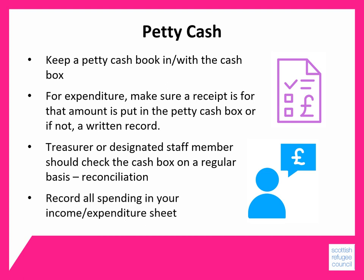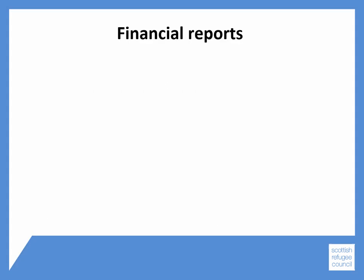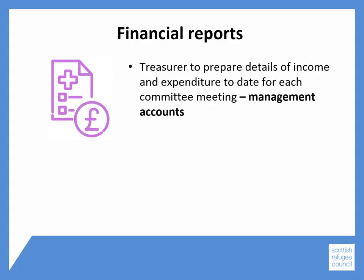All of this spending should eventually be recorded in your income expenditure sheet. You can decide whether you have to detail every single petty cash transaction, or whether you can group some of the expenditure together, depending on whether you have to allocate the spend to different funders. It's good practice for your treasurer to prepare details of income and expenditure to date for each committee meeting. These are called management accounts. Funders may ask to see your management accounts, particularly if you're a new group and don't yet have a set of annual accounts.